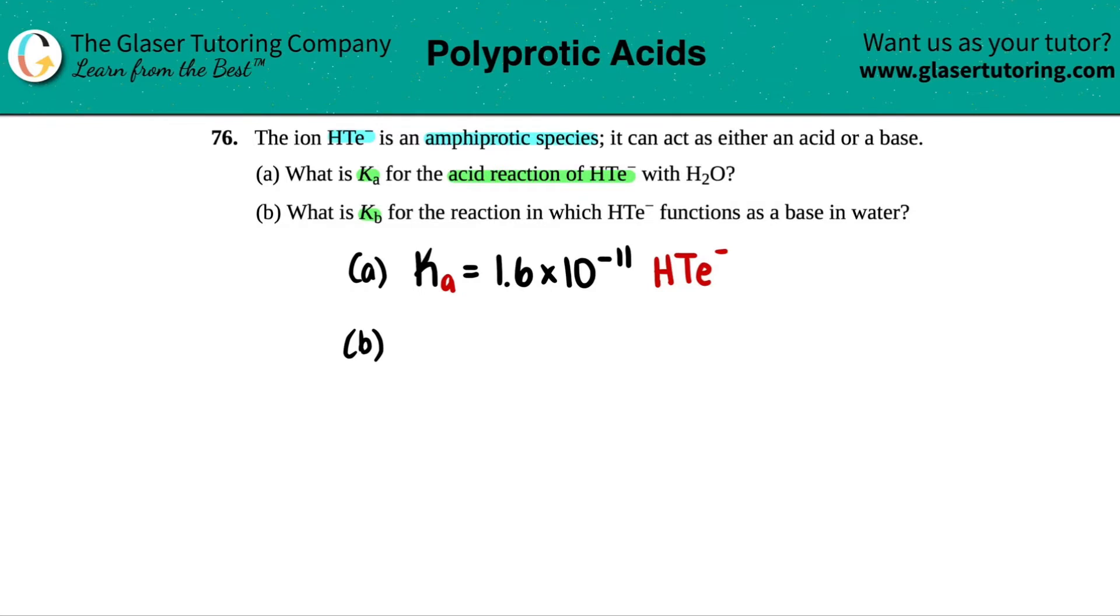So we have the Ka value of HTE-, right? All they wanted to do is just basically convert the Ka value, and A stands for acid. They wanted us to convert the Ka value to the KB. And you can convert a Ka to a KB by just using the formula that we know and love. It's this one right here. Ka equals, actually, no, not Ka. KW equals Ka times KB. And in this case, if we want to solve for KB, we want to solve for this guy.